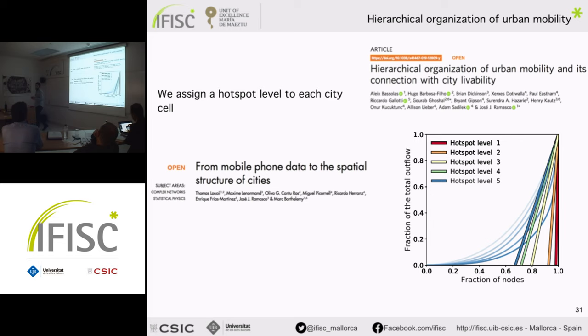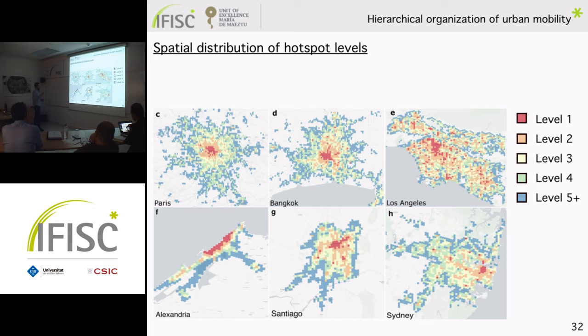Now let's look at how these hotspot levels appear on a map. Looking at cities of around 10 million inhabitants — Paris, Bangkok, and Los Angeles — and cities of around 5 million — Alexandria, Santiago, and Sydney — a pattern emerges: from left to right we go from cities where different hotspot levels are clustered together to cities where there is higher mixing between hotspot levels.